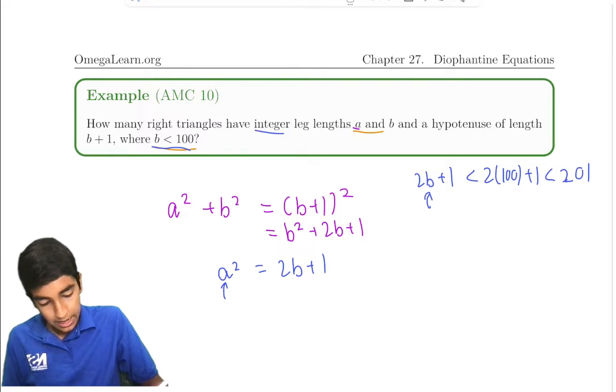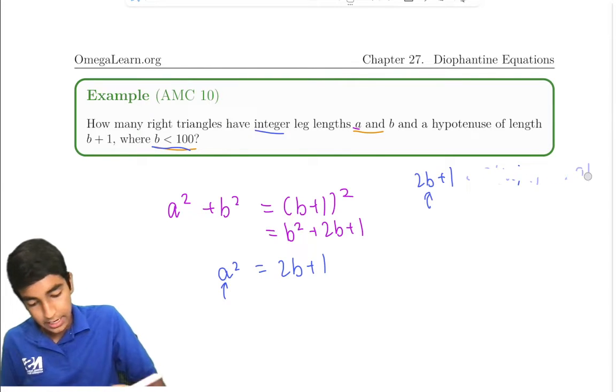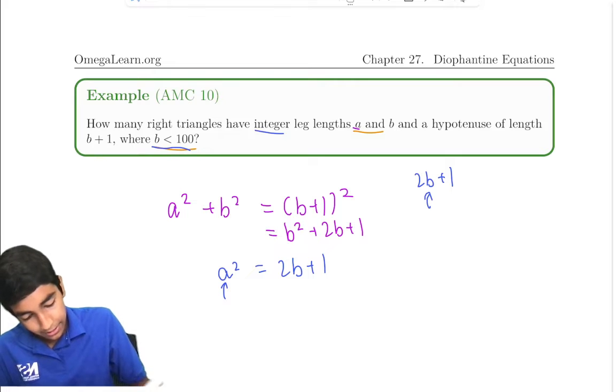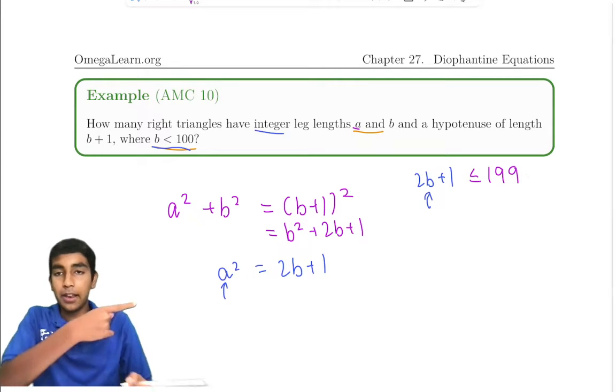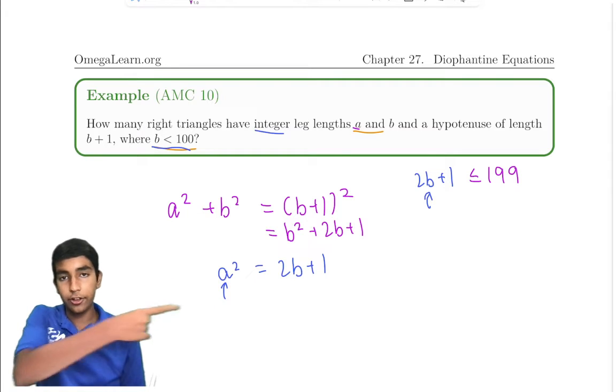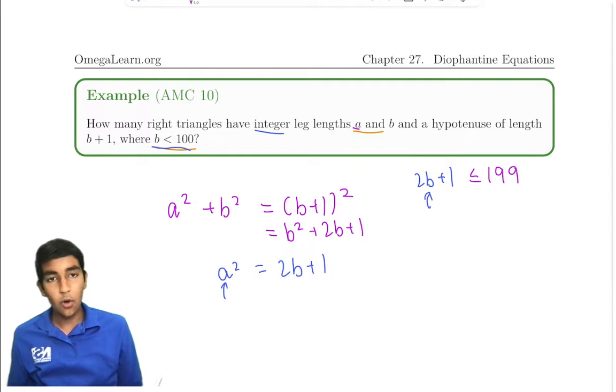So 2b + 1 is at most 199. Let's say it's less than or equal to 199. That's cool. But let's plug it into this equation now to really get what we're trying to find.